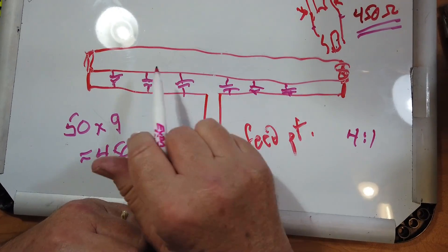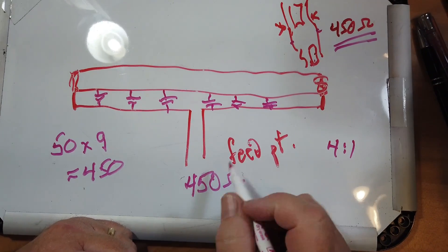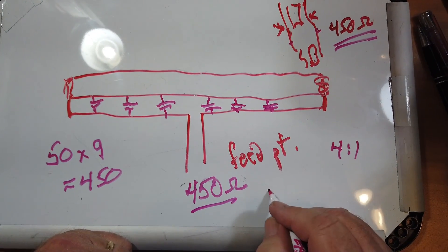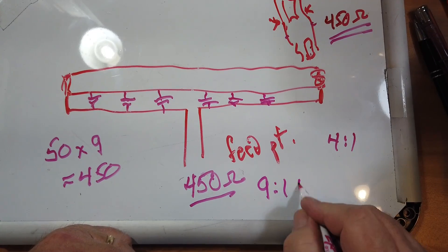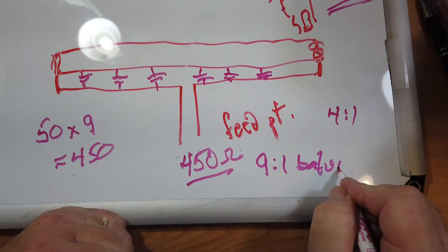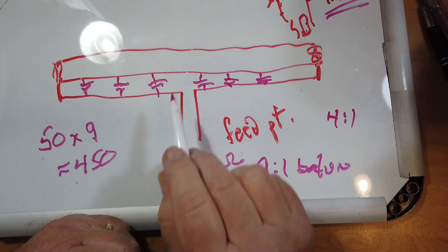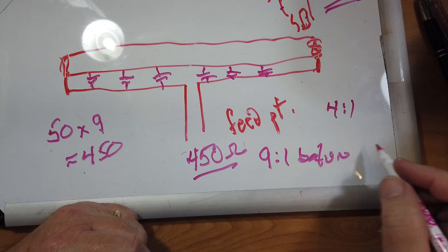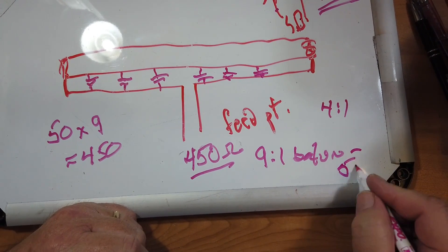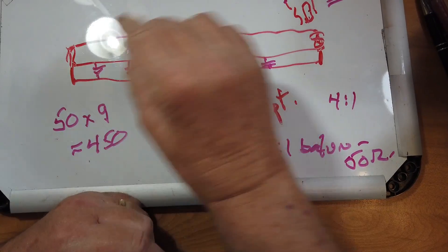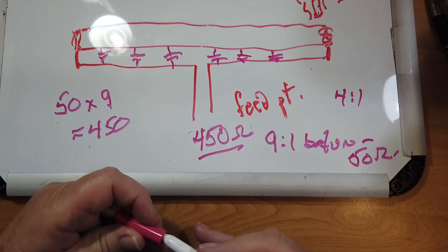Give or take, there's always issues that cause the impedance to vary. But this could go down to a nine-to-one balun, somewhere between the antenna and the shack, and go into 50 ohm coax, and everything is absolutely beautifully lined up.